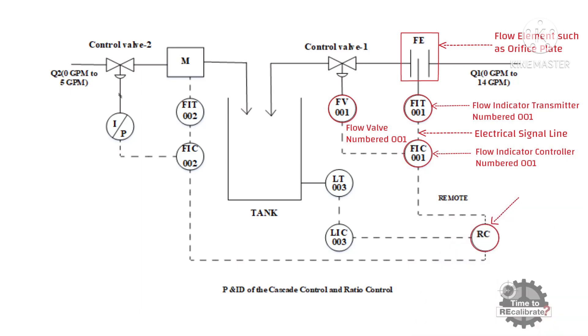And flow indicator controller numbered 001 is connected with flow valve numbered 001. In addition to this, flow indicator controller numbered 001 is also connected with ratio controller. And ratio controller is in DCS or in PLC. Now, let's go to other side.